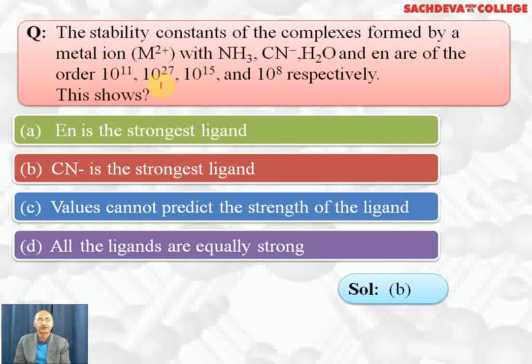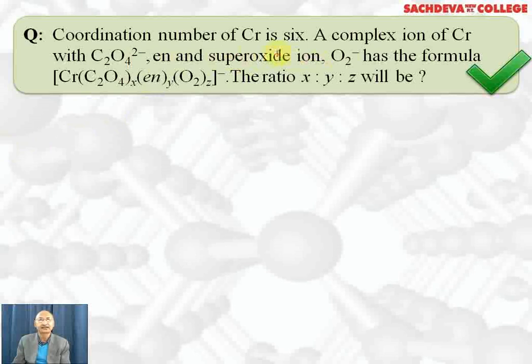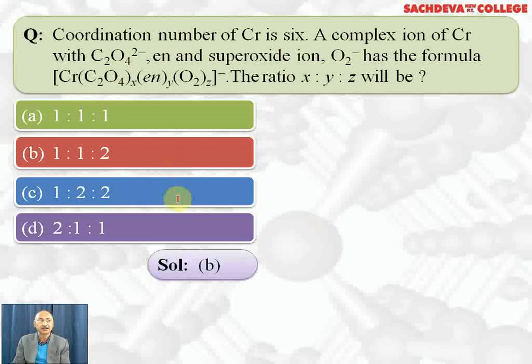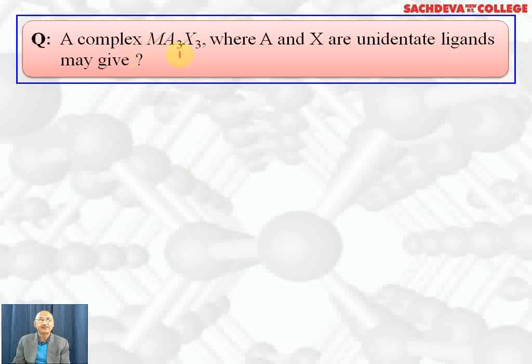The coordination number of chromium in a complex ion containing oxalate ion, en, and superoxide ion (O2²⁻) is 6. The formula is given in terms of x, y, z and we need the ratio x:y:z. The correct answer is B (1:1:2). If oxalate = 1 (charge −2), en = 1 (neutral), and superoxide = 2 (charge −1 each, so −2 total), then chromium is +3 and overall charge is −1. Only option B satisfies this.